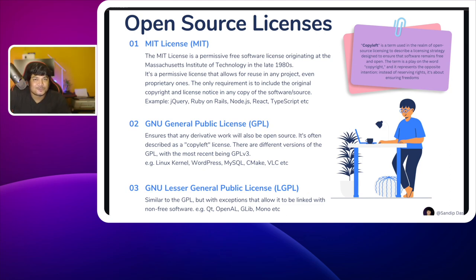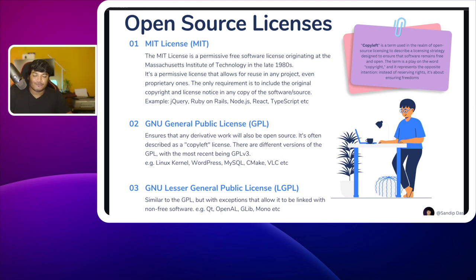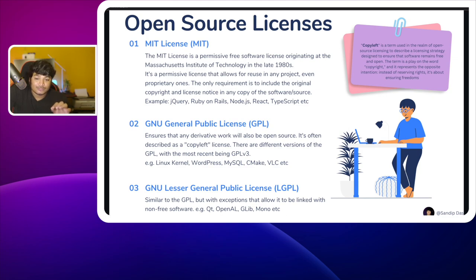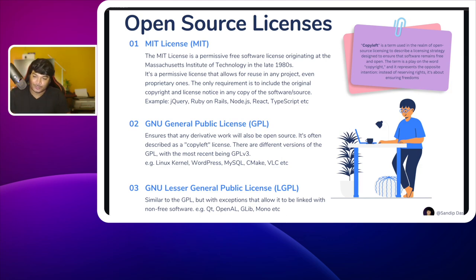The second open source license is the GNU General Public License, or GPL. It ensures that any derivative work will also be open source and is often described as a copyleft license. The most widely used version is GPL version 3. Copyleft is a term in open source licensing describing a strategy designed to ensure that software remains free and open — it's a play on the word copyright, representing the opposite intention, making sure software stays free and available for everyone.